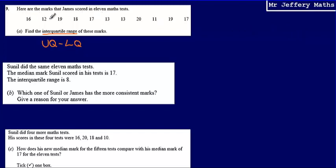So here are our numbers that we've been given, and these relate to the marks that James scored in 11 maths tests. To work out the upper quartile and the lower quartile, first of all, we're going to have to put these numbers in size order.